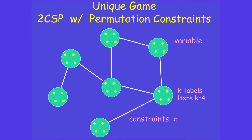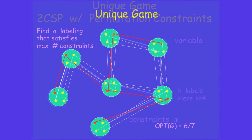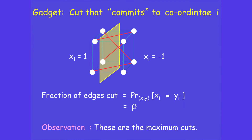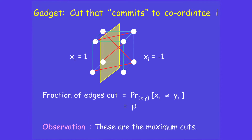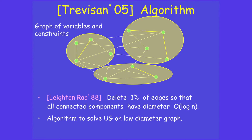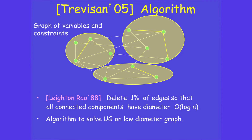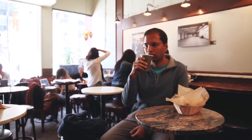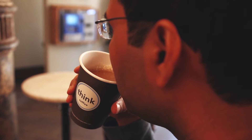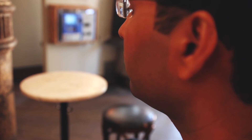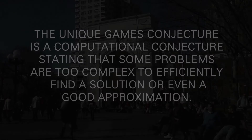One of the important contributions has been proposing the unique games conjecture and then developing research around this conjecture. I was vacationing in India, visiting family. This small idea came to me that if I use this unique games conjecture as a starting point of my field of research, it would really make the whole field easier and very consistent.